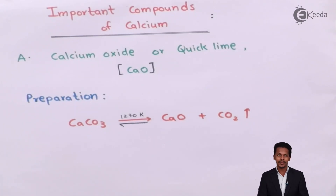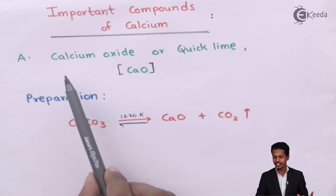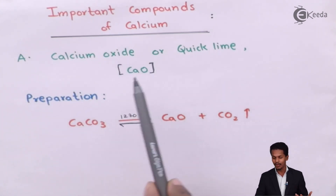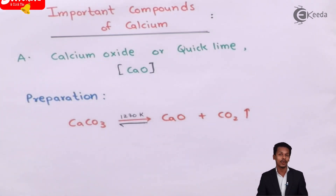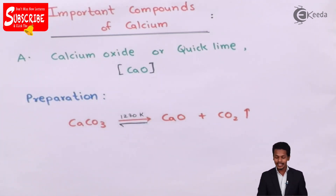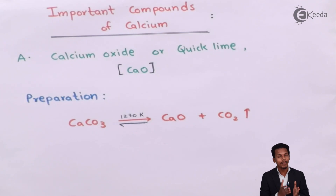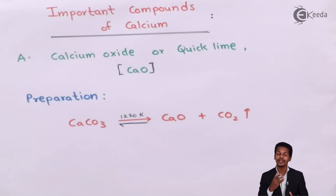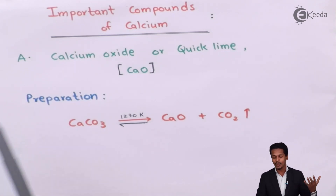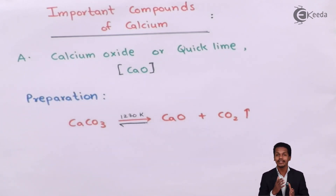The first component we are going to talk about is calcium oxide, basically known as quicklime, which has a molecular formula CaO. We are going to discuss how we can prepare quicklime or calcium oxide, along with its properties and uses.